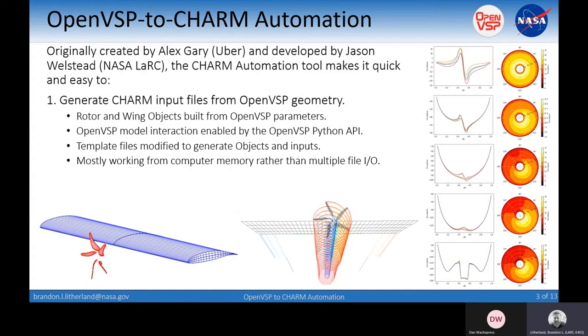The OpenVSP to CHARM automation was originally created by Alex Gary at Uber and then further developed by Jason Wellstead here at NASA Langley. The automation tool really does make it quick and easy to generate the CHARM input files that are necessary to execute from an OpenVSP geometry. Things like rotor and wing objects are built using OpenVSP parameters.